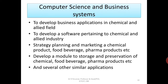Finally, in computer science and business systems, to develop business applications in chemical and allied fields, you should know the basic fundamentals of the chemical plant, for which you need chemistry. To develop software pertaining to chemical and allied industries, to plan marketing strategies for chemical products, food beverages, pharma products, or to develop a model for storage and preservation of chemical, food beverage and pharma products — the basis of chemistry is necessary.